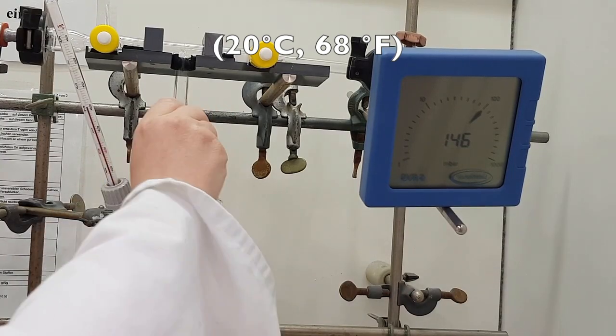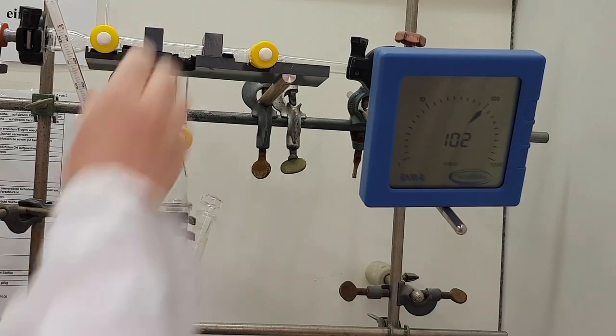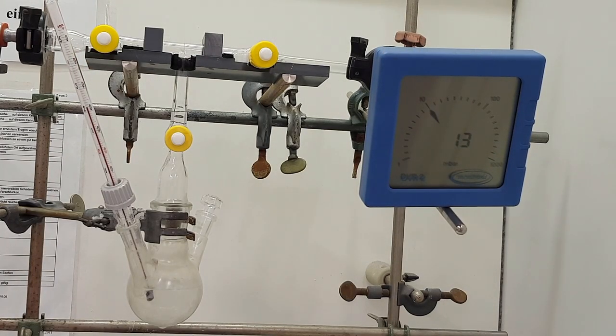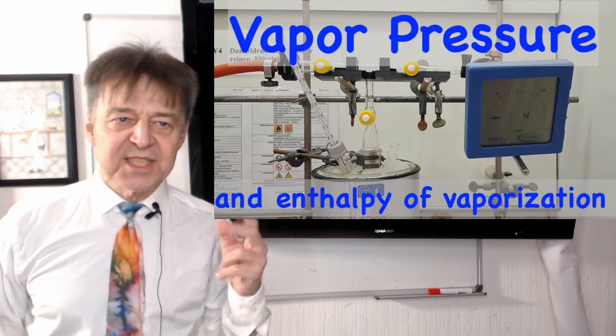Close stopcock 1 and turn the vacuum pump on. Open stopcock 3. When the manometer again reads approximately 0.7 kPa, stopcocks 3 and 2 are closed and the vacuum pump is switched off.